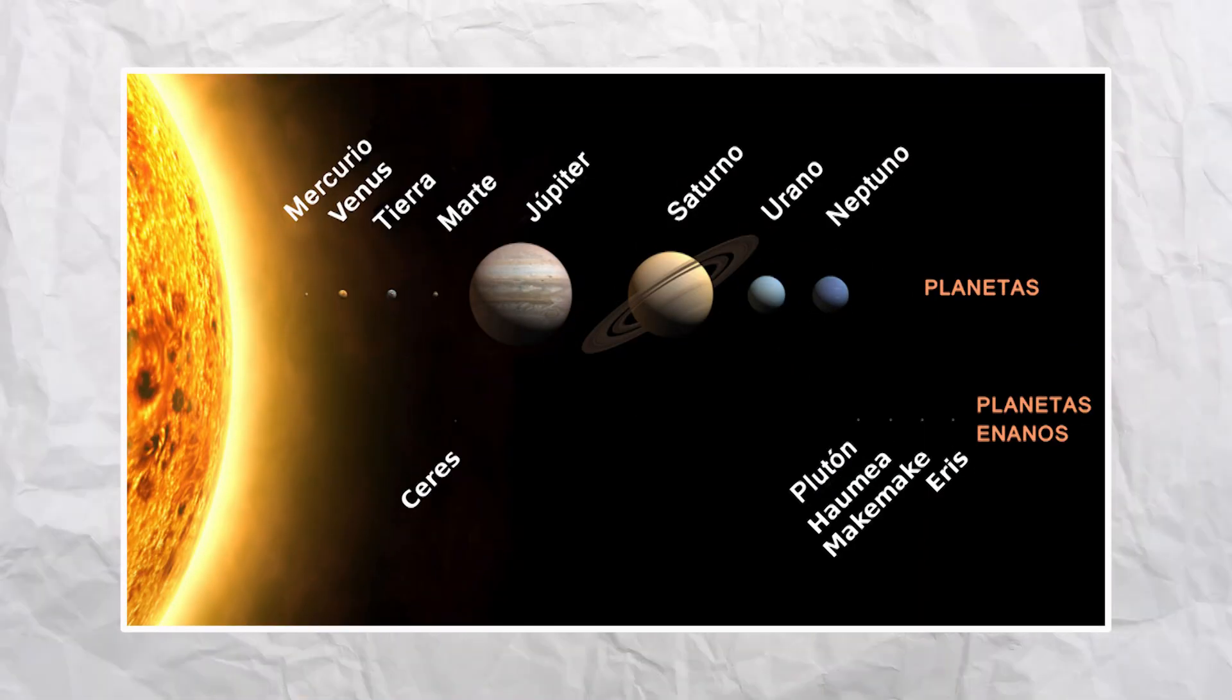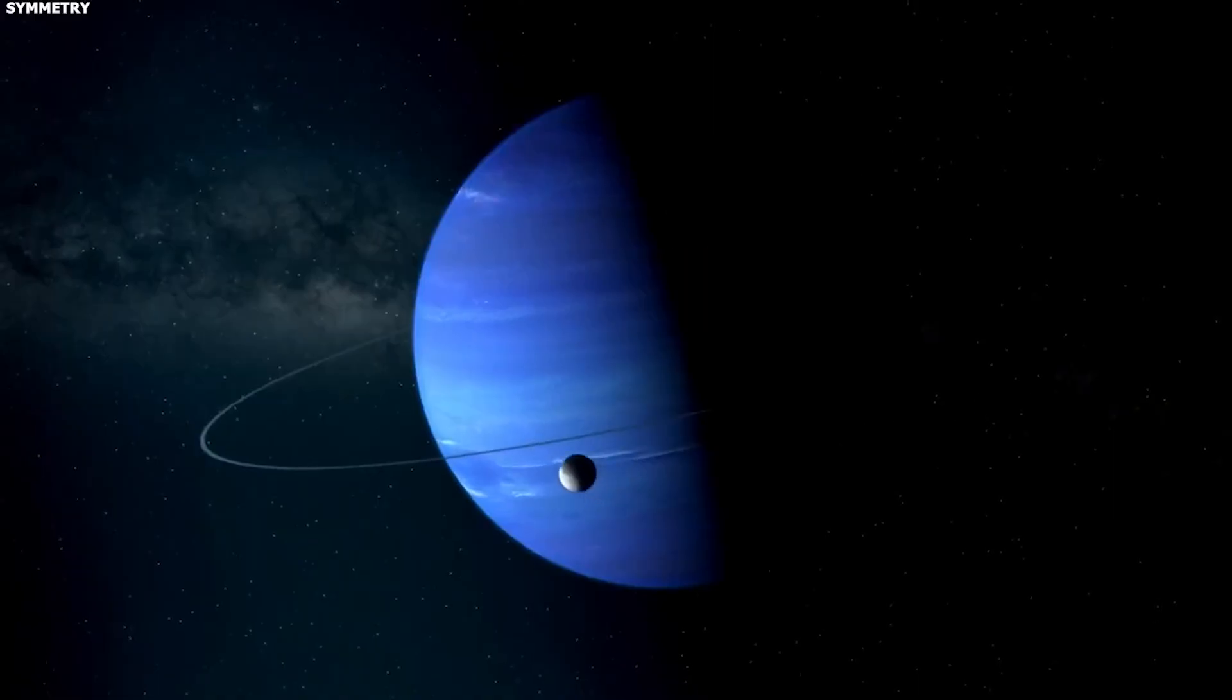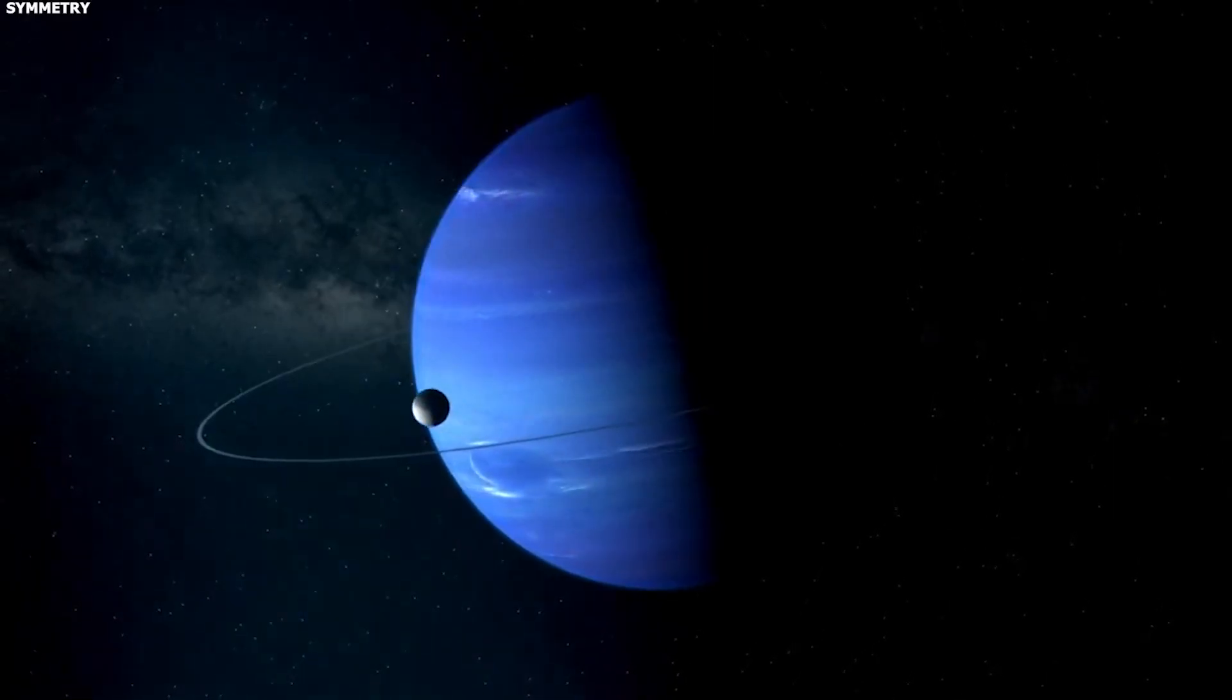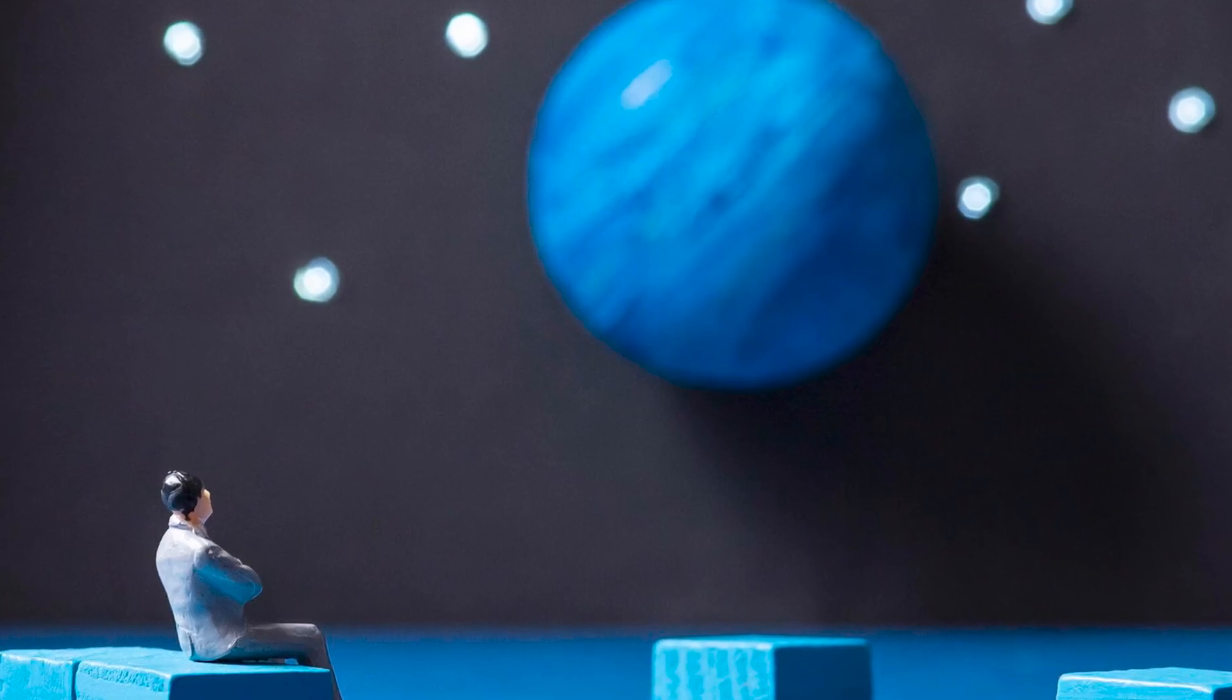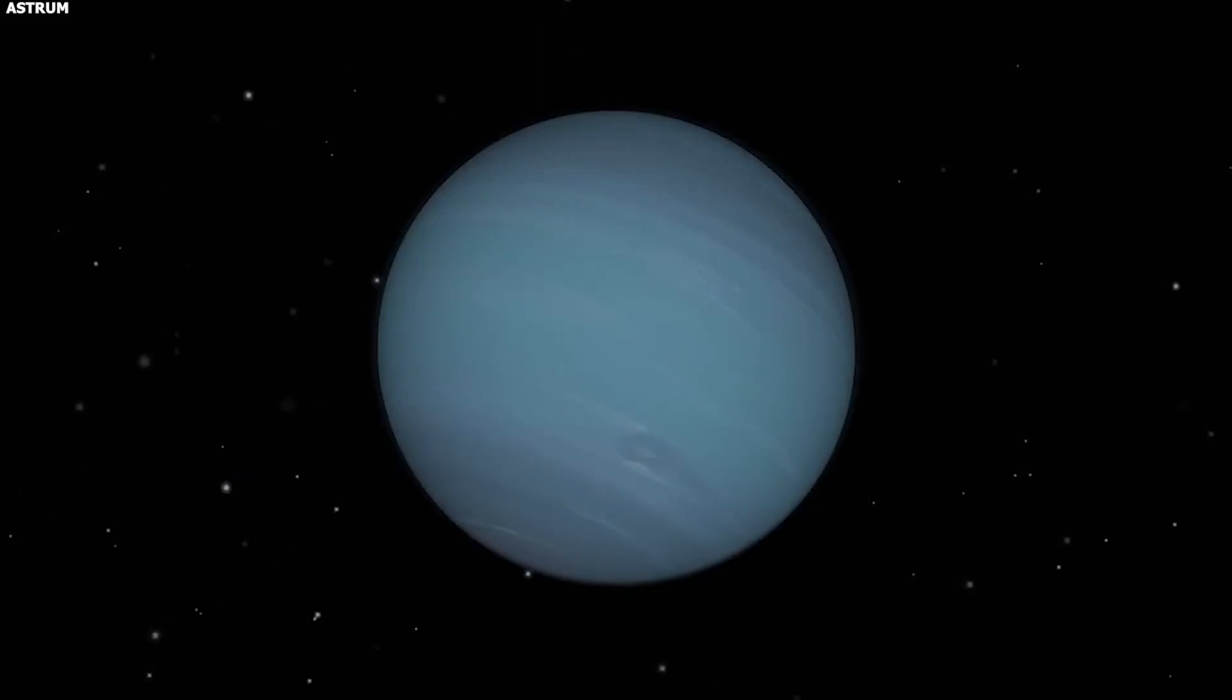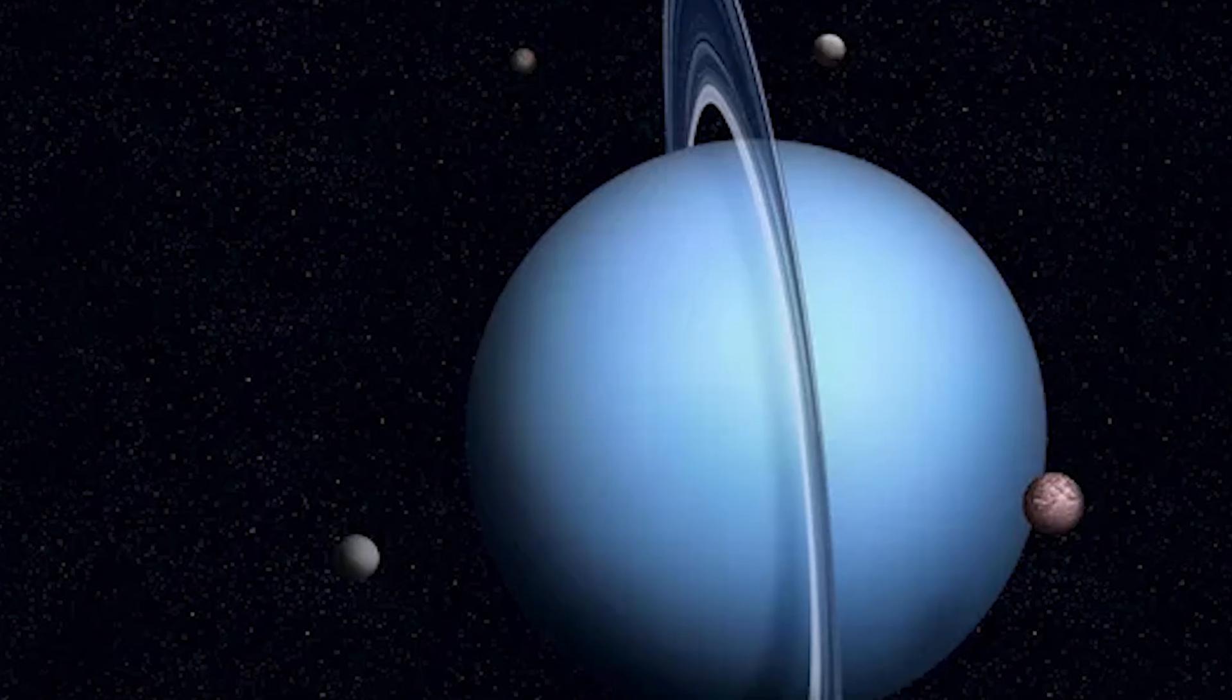Two centuries ago, astronomers noticed something weird about the planet Uranus. Its orbit wasn't following the laws of gravity correctly. It was drifting off course, wobbling in ways that Newton's equations couldn't explain. So scientists made a bold prediction. There must be another planet out there, a dark, unseen world whose gravity was tugging on Uranus and messing up its orbit.